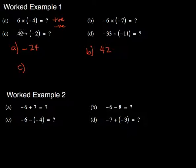For C, I look at the number of negatives I have. Again, it's just one negative, so my answer would be negative. And then I look at simply 42 divided by 2, which is 21.